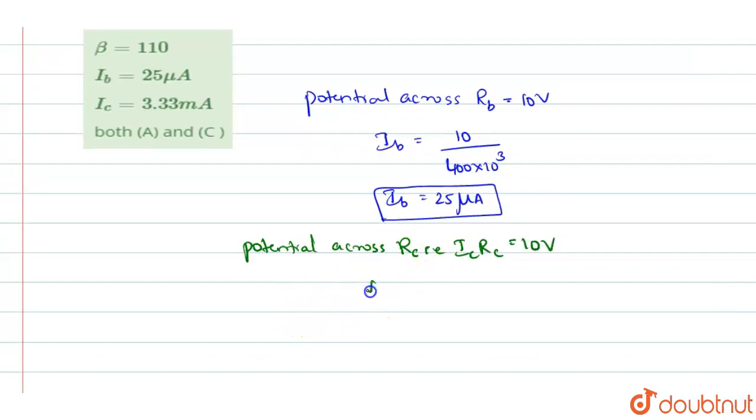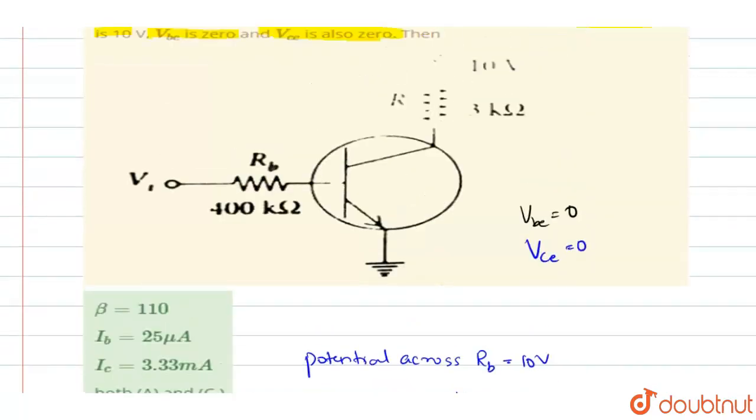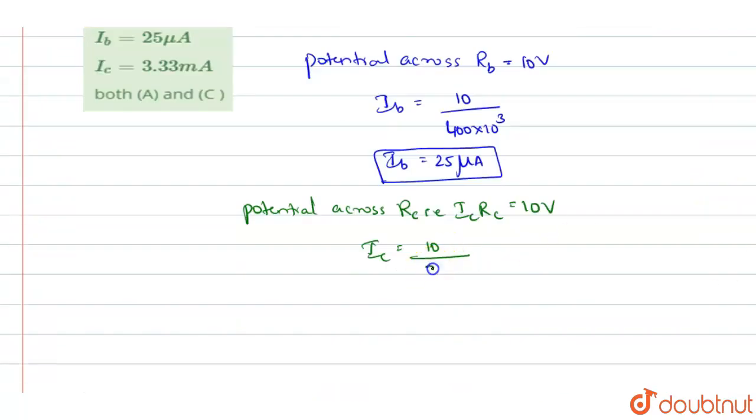And so, IC will be equal to, same way as we did for IB, IC is equal to 10 divided by the resistance, it is 3 kilo ohms, so 3 into 10 power 3. And this gives you 3.33 milliampere. So, this is the collector current you have.